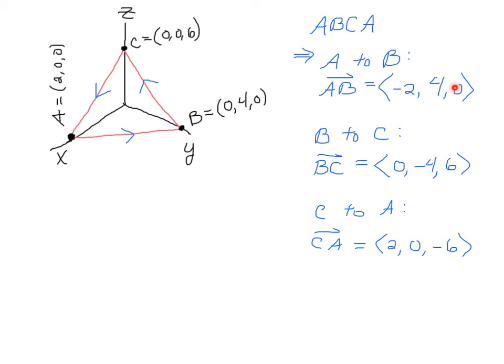So here are my direction vectors for the first path, A to B, my direction vector for the second path, B to C, and my direction vector for the last, the third and final path, that's from C to A.